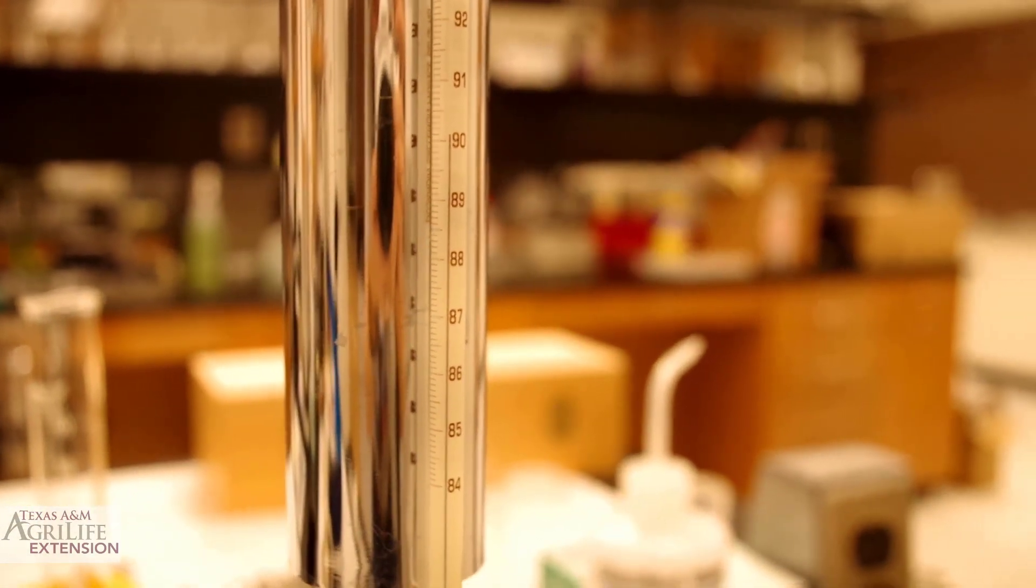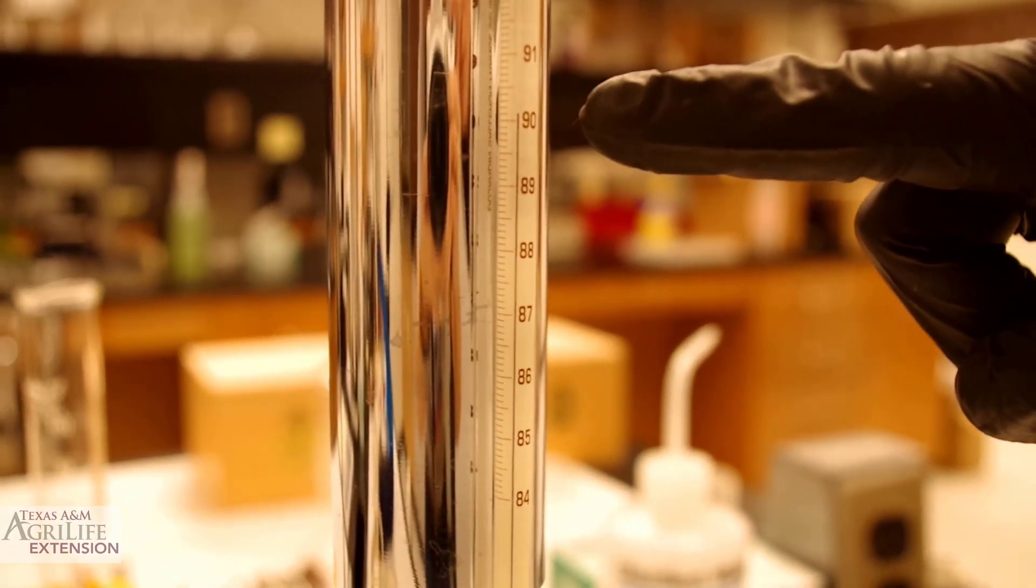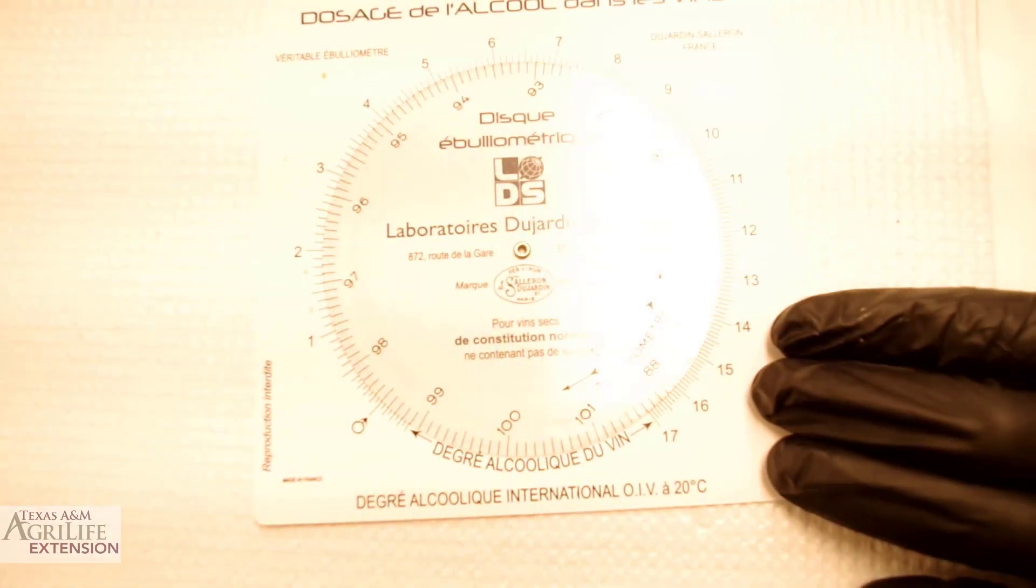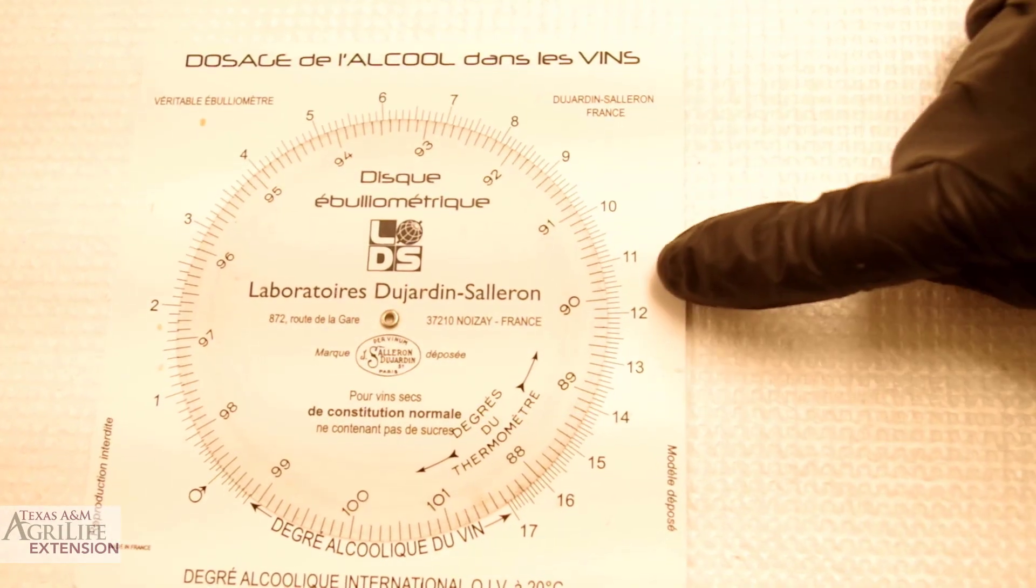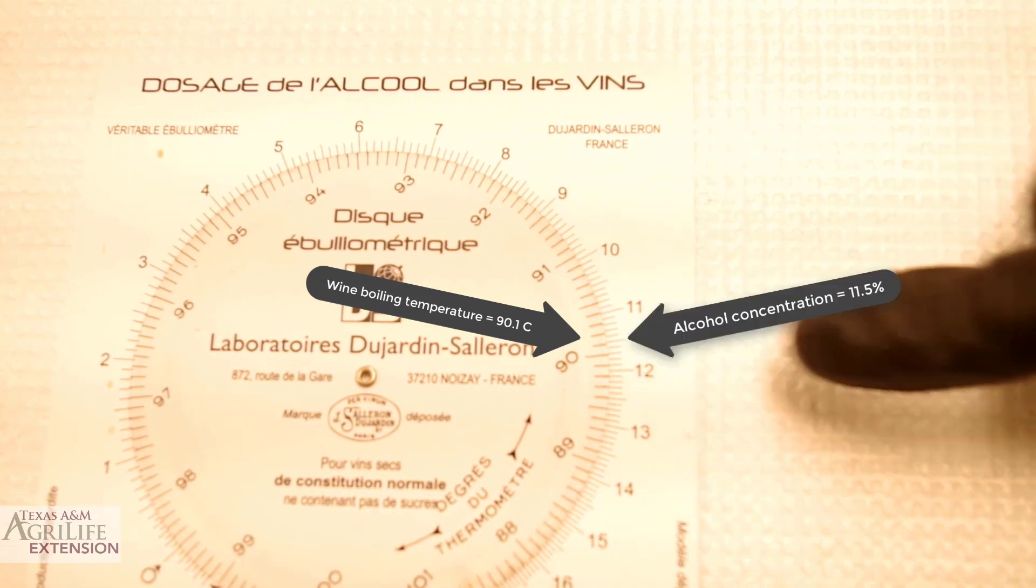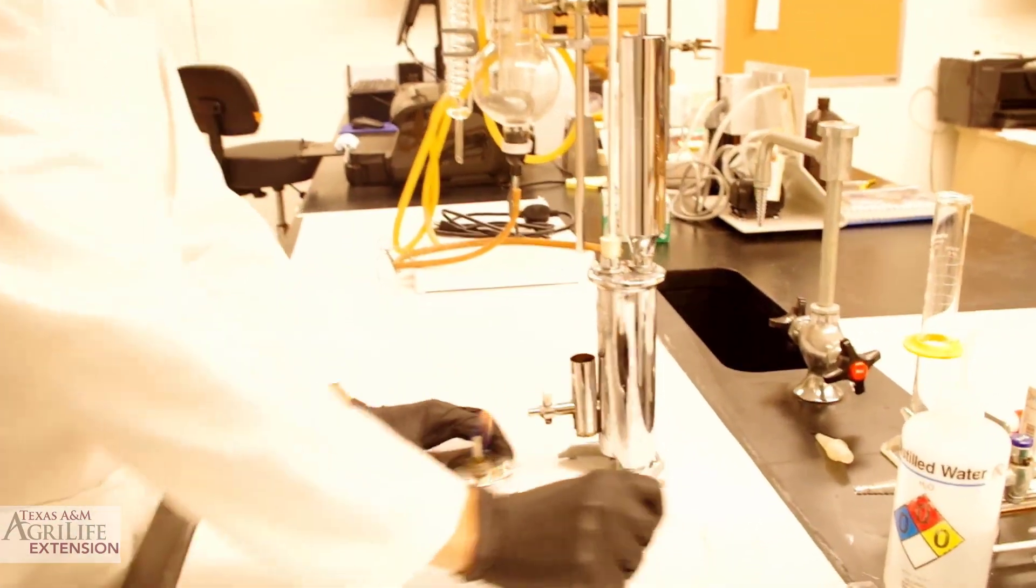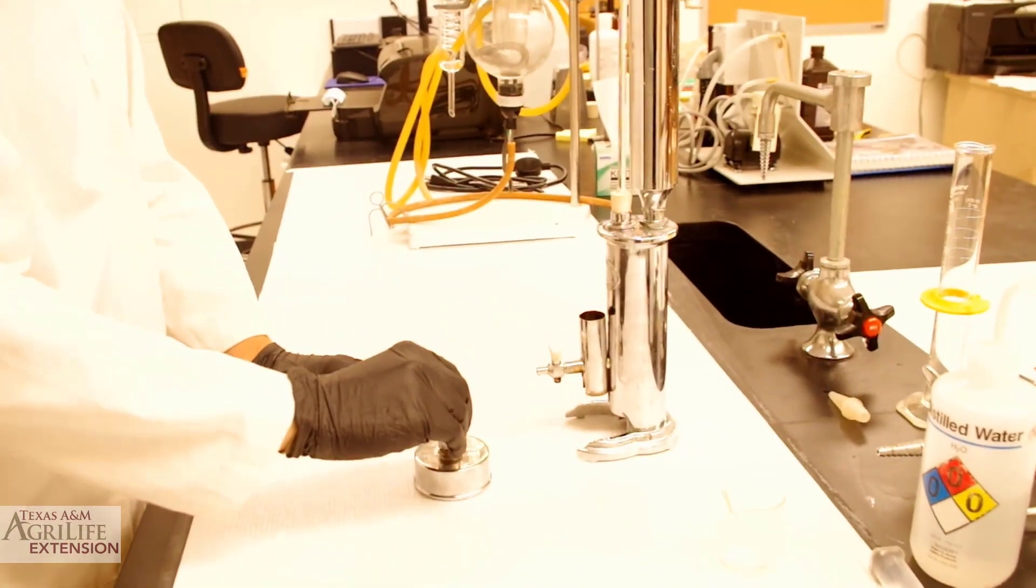You are ready to do your reading once the sample has been boiling and the temperature has stabilized for more than 30 seconds. Our wine boiling temperature today is 90.1 degrees centigrade. Going back to our dial, we find our wine boiling temperature on the inner circle and match it with our alcohol concentration on the outer circle. In this instance, the alcohol concentration is 11.5% alcohol by volume. We can now get our ebuliometer ready for the next sample.